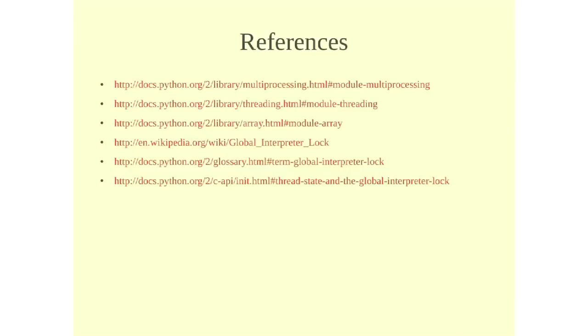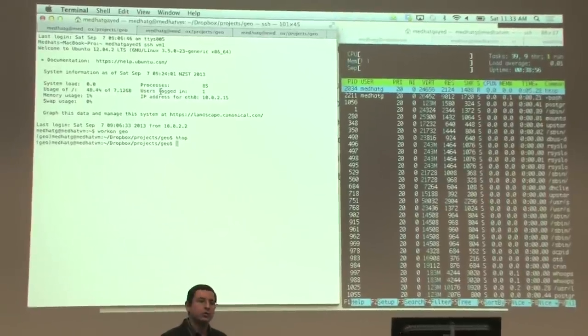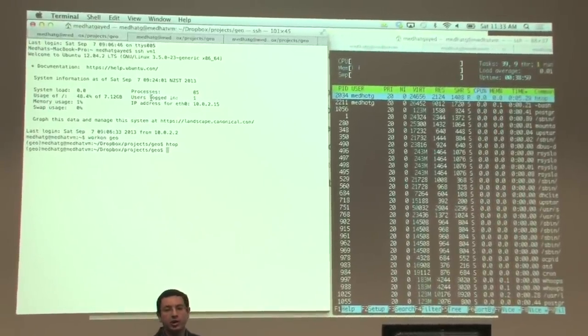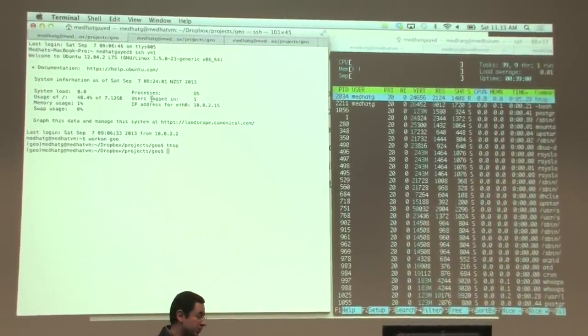These are some references that are on the Internet and you will probably get in the PDF file. So I'm going to show you a little demo now. This machine here, I've got three virtual machines running. One of them has one CPU and the second has four CPUs and the third has eight CPUs. And I will show you what difference the CPUs can make when you have a multiprocessed script running.